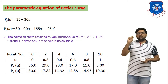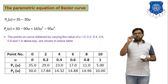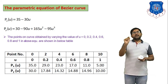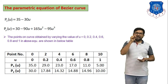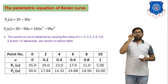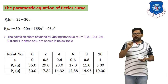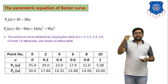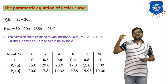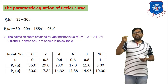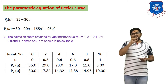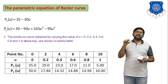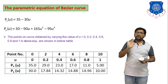The results are: u = 0 gives (35, 30); u = 0.2 gives (29, 17.84); u = 0.4 gives (23, 14.32); u = 0.6 gives (17, 14.88); u = 0.8 gives (11, —); u = 1 gives (5, 10). You have to calculate all these values on a calculator in the exam.